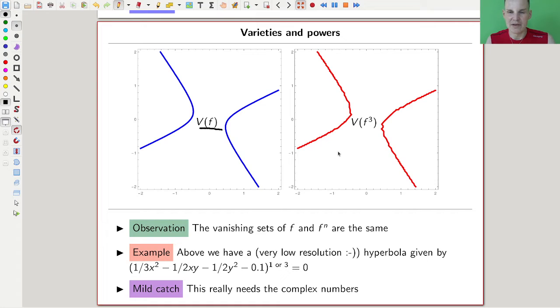That's what I did—just set that up. And yeah, they're exactly the same. So the variety of f and the variety of f cubed, in this case they are really the same.